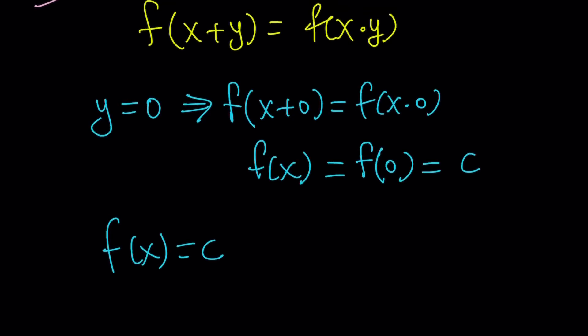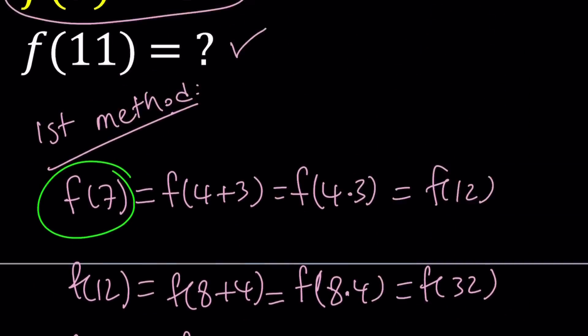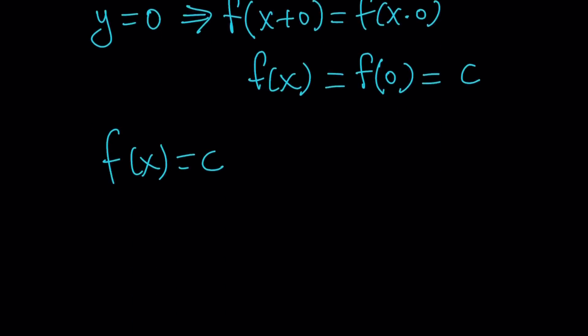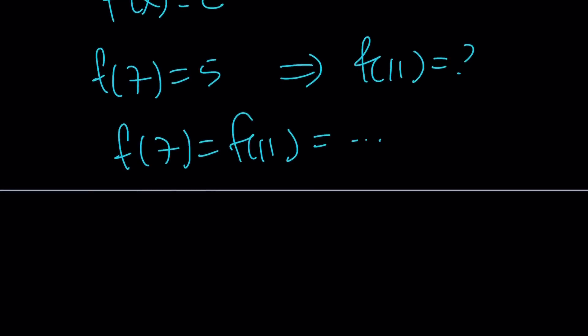So, F of X is a constant, therefore, we are given that, what was it? F of seven equals five. Okay. We are given F of seven equals five. We're supposed to find F of 11. But guess what? If F is a constant function, then F of seven equals F of 11 and so many others. But this is what I care about. F of seven is five, therefore, F of 11 is also five.